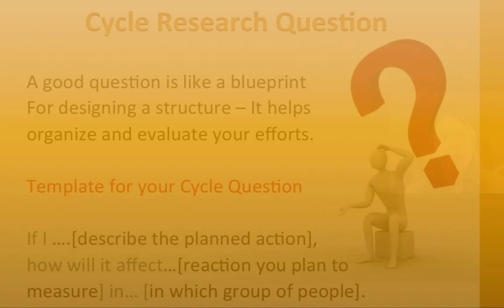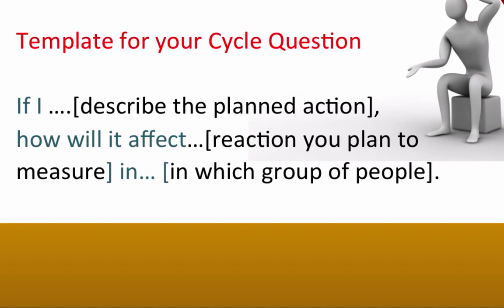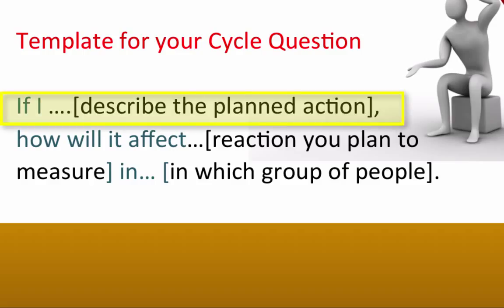The first tool that will help you in thinking about your data is your research question. If you developed it in the way suggested — describing in the first part your action, then how it will affect, and then describing the interactions you are expecting — you might want to organize your data into evidence that indicates the action actually happened or tells you how the action happened. For example, if you were changing the way you organize meetings, things like who came, whether they used new tools, and their reaction to those tools might all be organized under evidence about the action.